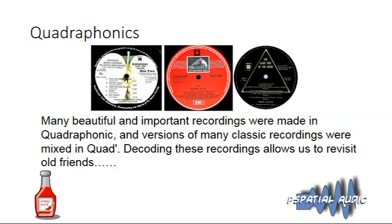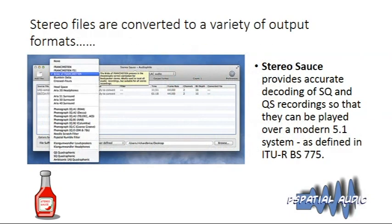Nonetheless, many beautiful and important recordings were made in quadraphonic — Dark Side of the Moon, Imagine, a Fauré Requiem — and some are of very serious artistic value. It's impossible to listen to them unless you have very old quad gear. So we decided to incorporate quad decoding within Stereo Source. We support SQ and QS formats, decoded for replay over a modern 5.1 system.